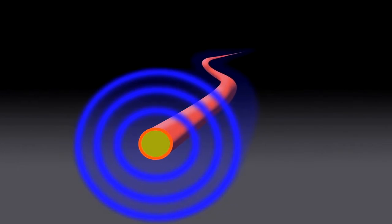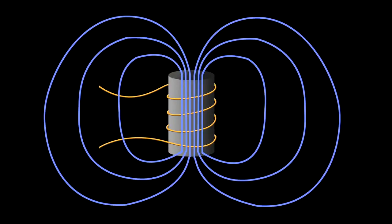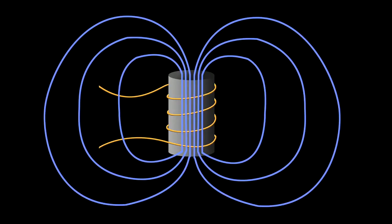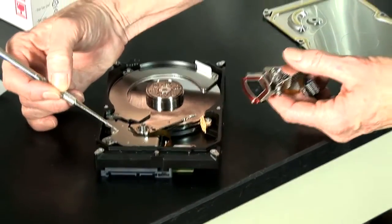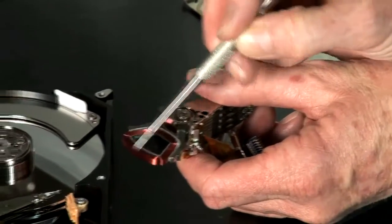So how we are using that here is that there is a coil, which is actually hidden under this magnet. Under this plate there's a magnet, and below the magnet is a coil.